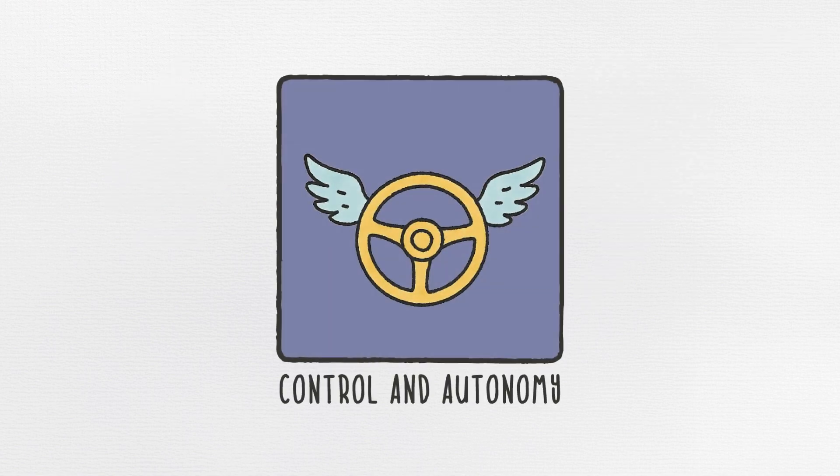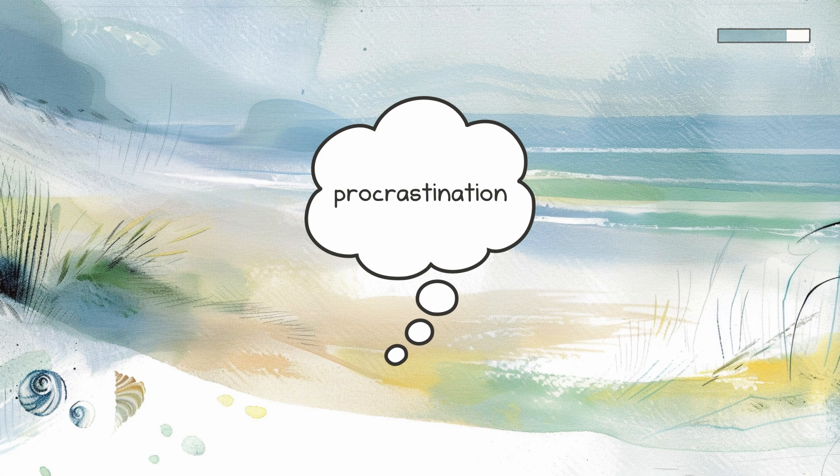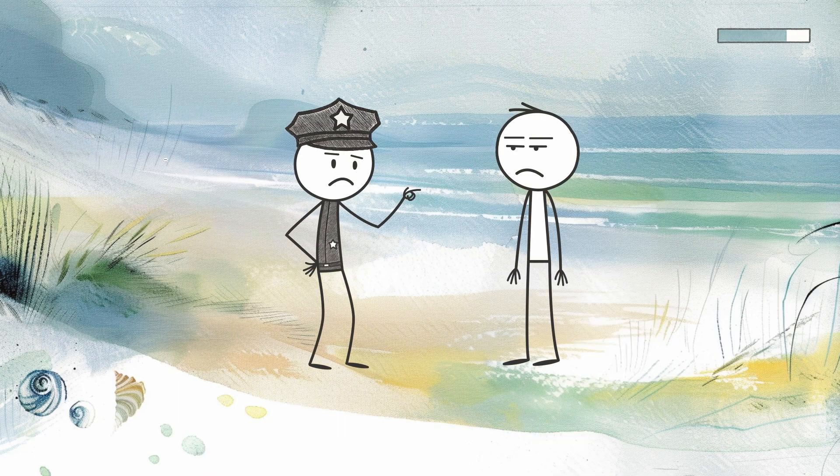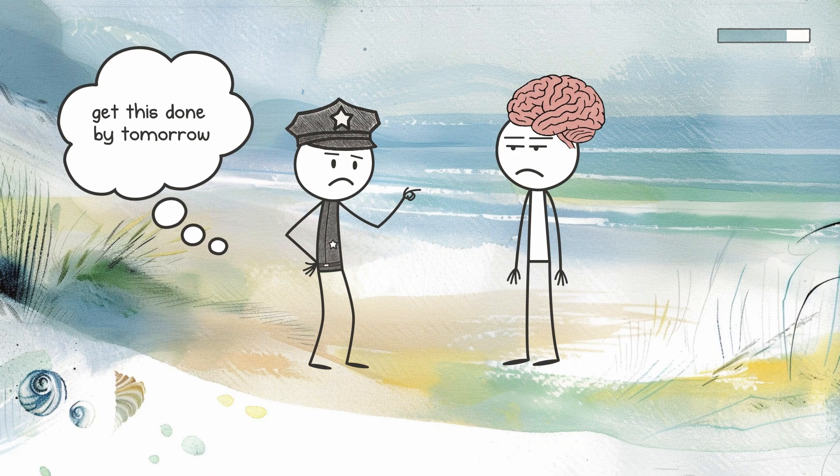Number three, control and autonomy. Sometimes procrastination is less about the task and more about who's asking you to do it. When someone else sets your deadline, your brain can rebel by asserting its own timeline.